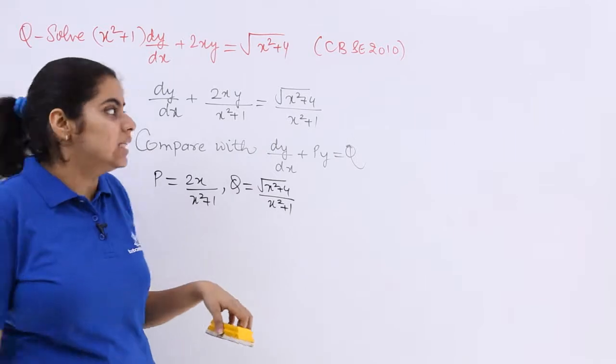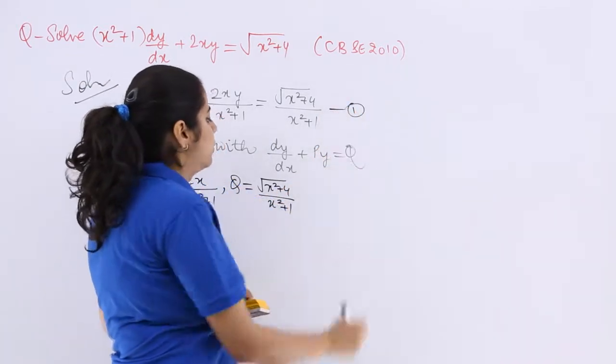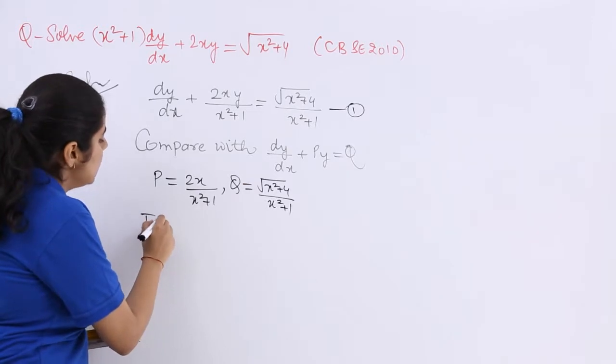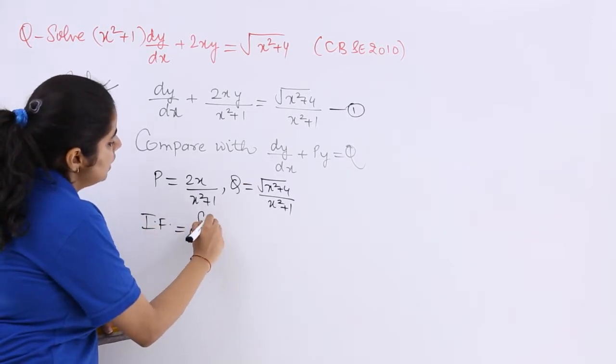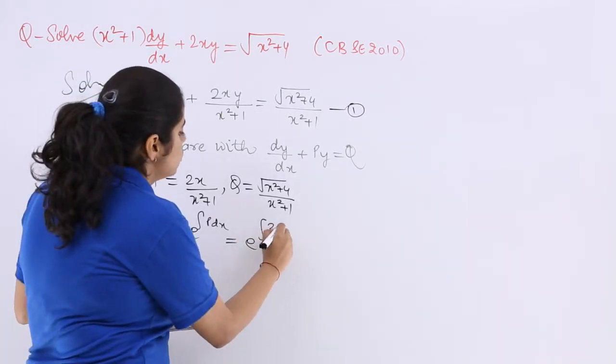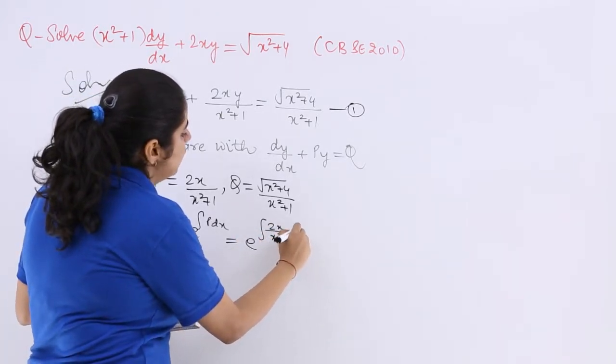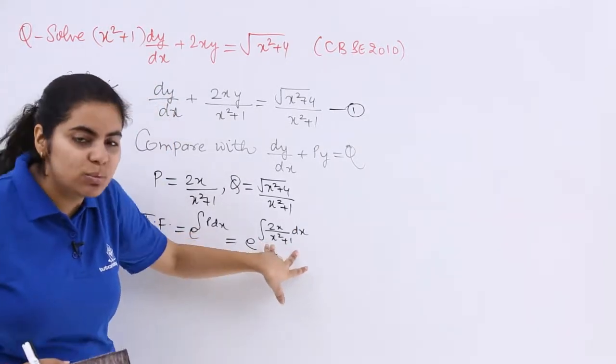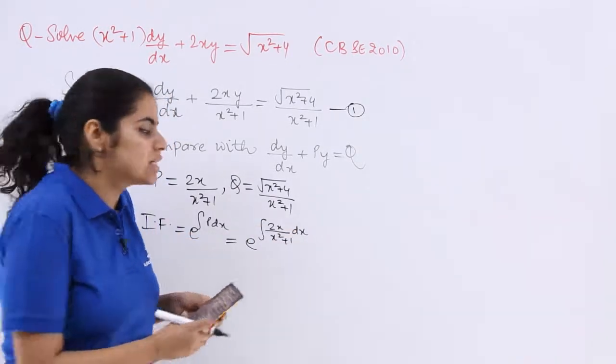Now very easily let me name this as equation number 1 and p and q will help me in calculation of the integrating factor which is e^(∫p dx). What is p? p is 2x/(x²+1) dx and very easily now see x²+1's differentiation is 2x.